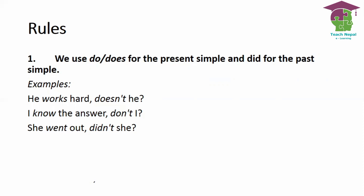We use 'do' or 'does' for the present simple and 'did' for the past simple. For example: 'He works hard, doesn't he?' — here 'works' is a main verb, so the auxiliary form is 'does'. Since the statement is positive, we write the negative 'doesn't'.